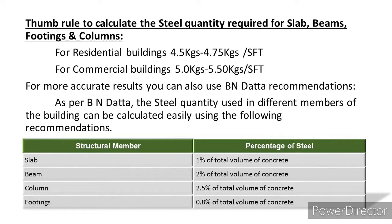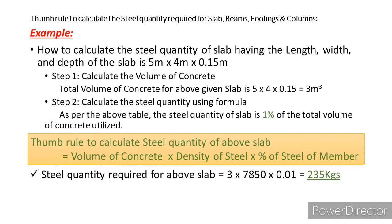As per BN data, the percentage of steel by total volume of concrete for each structural member is: slab — 1%, beam — 2%, column — 2.5%, and footings — 0.8%. For example, to calculate the steel quantity of a slab having length, width, and depth of 5m × 4m × 0.15m.